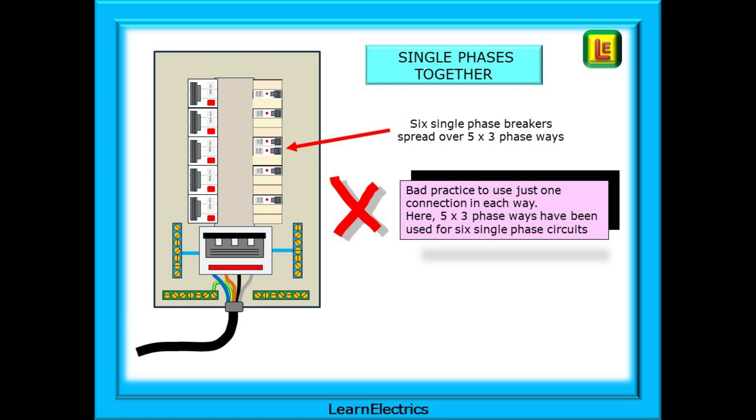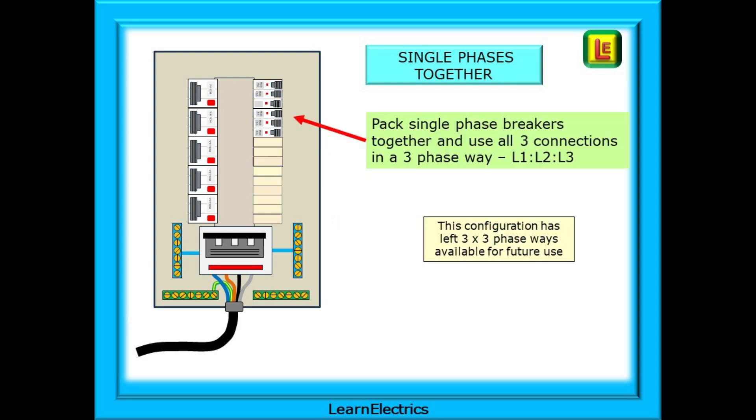Good working practice says that we should try to keep single phases together. Here, we have six single-phase circuit breakers spread over five three-phase ways. As we said, it's bad practice to use just one connection in each way. If we want to add a three-phase breaker to the circuit, where is it going to go without moving things around? Far better to pack single-phase breakers together and use all three connections in a three-phase way, L1, L2 and L3, and then move on to the next way. By wiring to this configuration, we've left three three-phase ways available for future use and expansion.